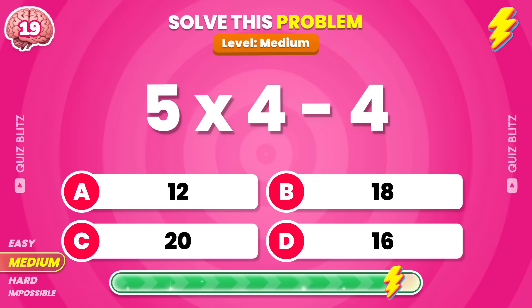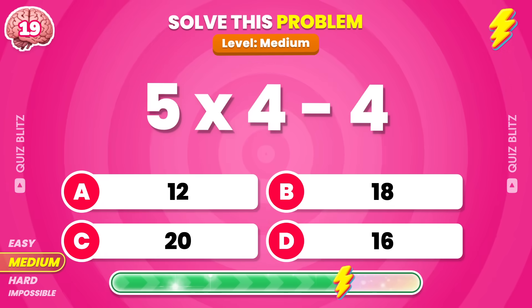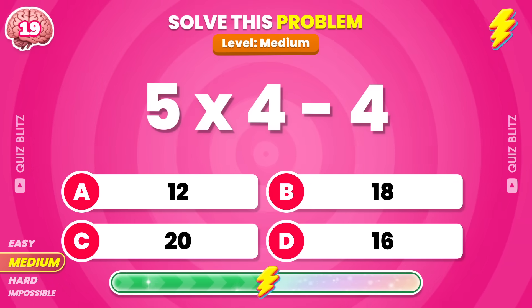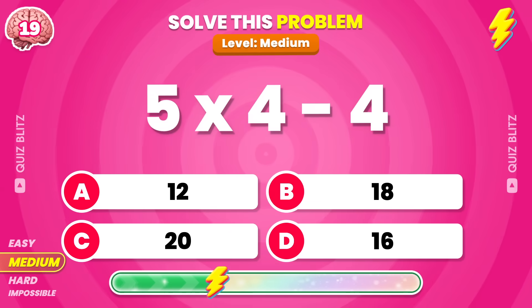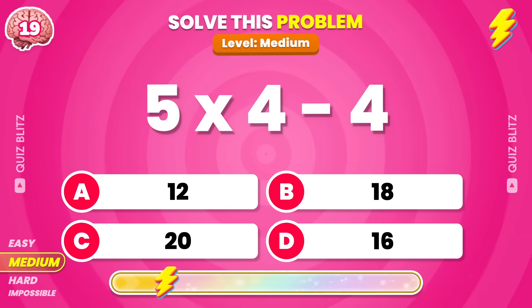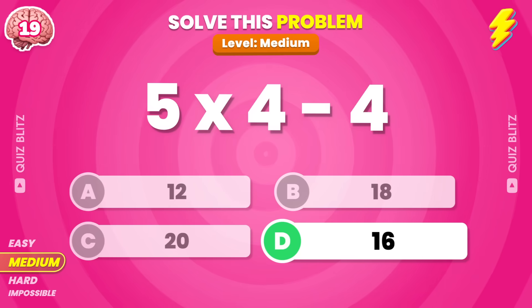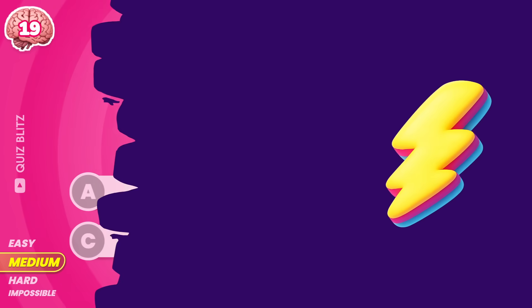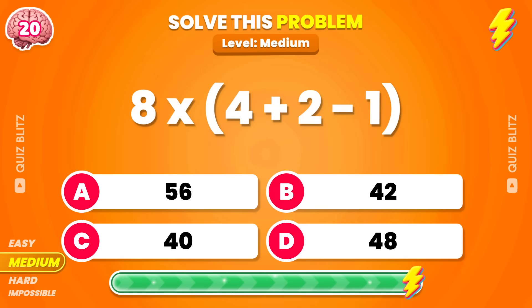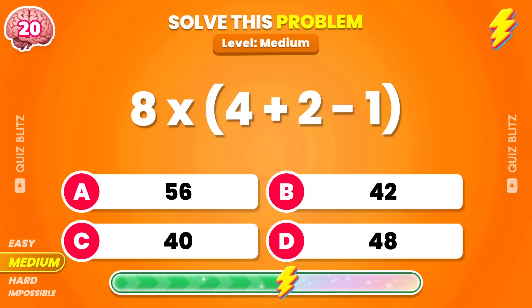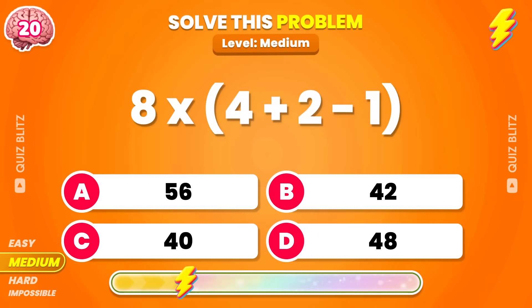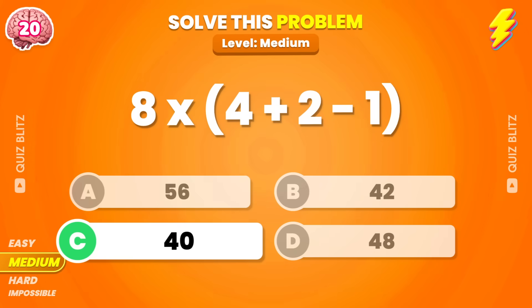5 times 4 minus 4. The answer is 16. 8 times 4 plus 2 minus 1. The result is 40.